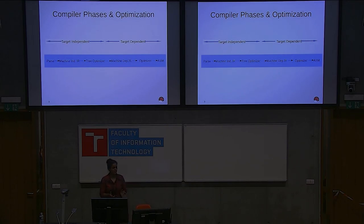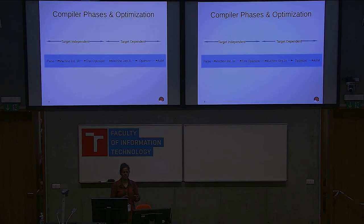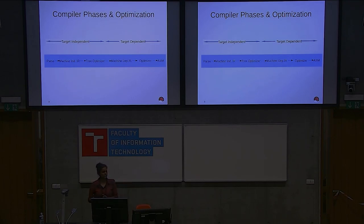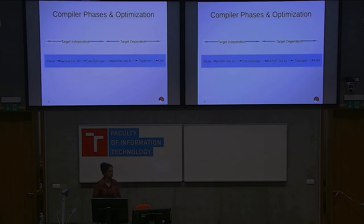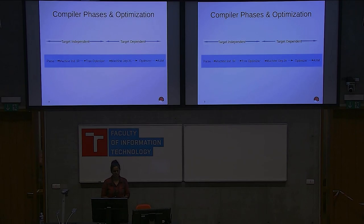Then it does a first level of optimization, with various passes happening in that first level that make a lot of changes to get better performance — but only if you enable the optimization flags to the compiler. Then it converts your code into machine-independent intermediate representations. In GCC, we have RTL representations, which is the machine-independent intermediate representation. Then it does a second level of optimization, and then you get your assembly code.